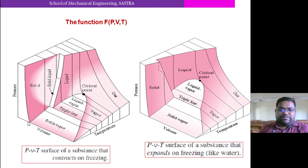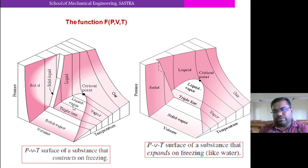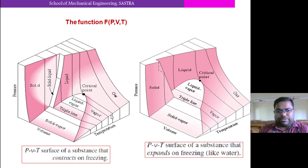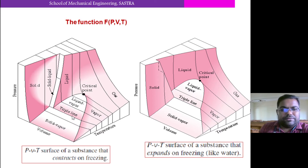This line below the triple point represents the sublimation curve. This is the sublimation curve, this is the fusion curve — from solid to liquid. And then this is the saturated liquid curve, where liquid is going to evaporate beyond it. This zone is a two-phase region where evaporation is taking place, and then finally it becomes vapor. So below the triple point line there will be no liquid phase — solid will directly go to vapor. This curve is the sublimation curve, this is the fusion curve, and this is the triple point line.